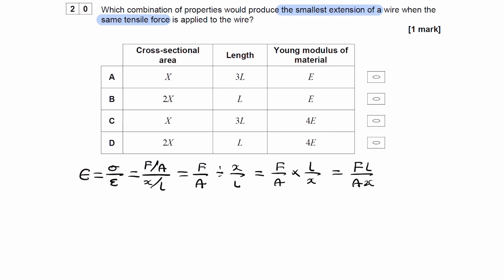So the question is asking us what properties produce the smallest extension, so let's rearrange that equation for X. Switch the X with the E. That then becomes F L over A E. We're told in the question that the same tensile force is applied to the wire, so F is a constant.